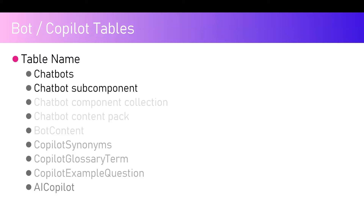To start with, there are a couple of tables which are very important: the Chatbots table and the Chatbot Subcomponent table. The Chatbots table basically contains a list of all the chatbots you have created — that includes older bots using Power Virtual Agent and also the new Copilot. So Chatbots basically contains a list of all the chatbots along with their metadata.